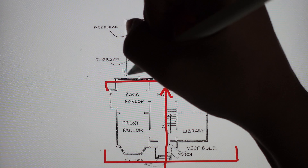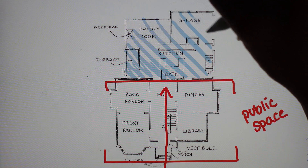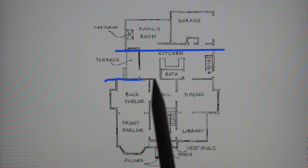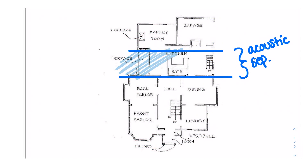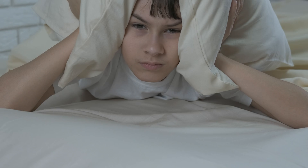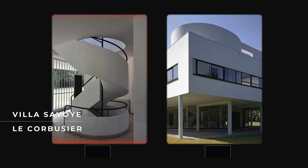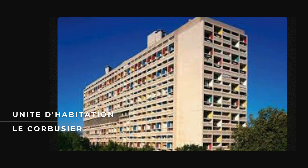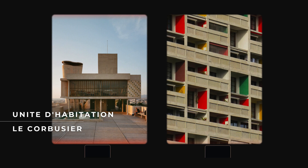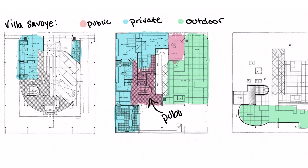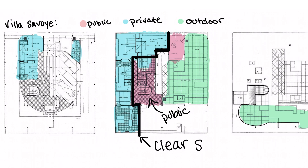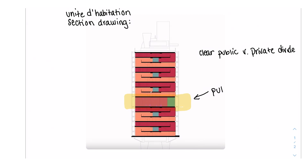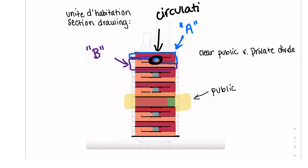Effective zoning segregates areas by function, ensuring activities like sleeping, cooking, and socializing occur without interruptions or unwanted interactions. It would be rather annoying if you're trying to sleep and the living room is right there. In the Villa Savoye and Unité d'Habitation, the architect Le Corbusier implemented a clear division between public areas such as living rooms and circulation spaces, and private spaces including bedrooms and bathrooms.